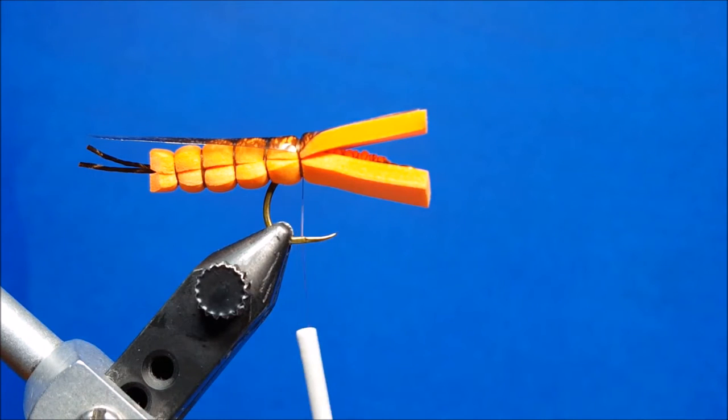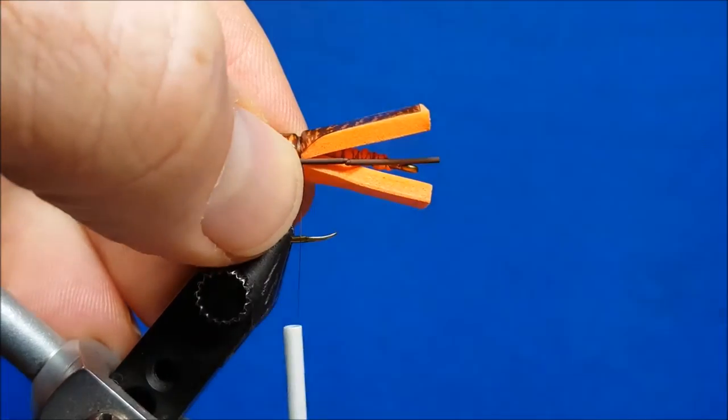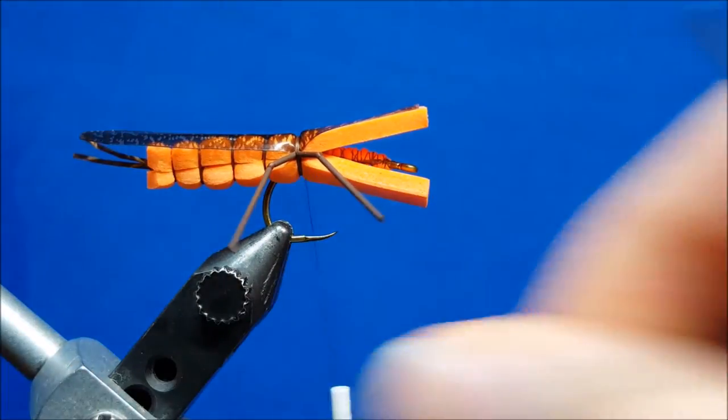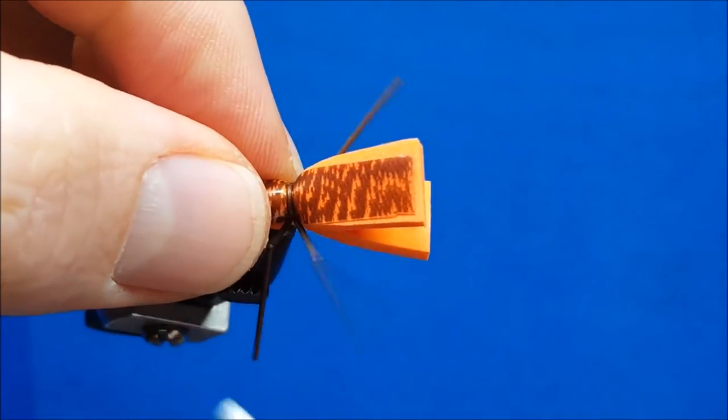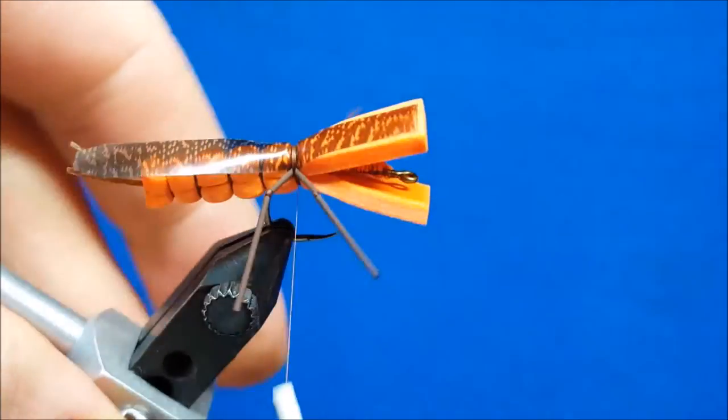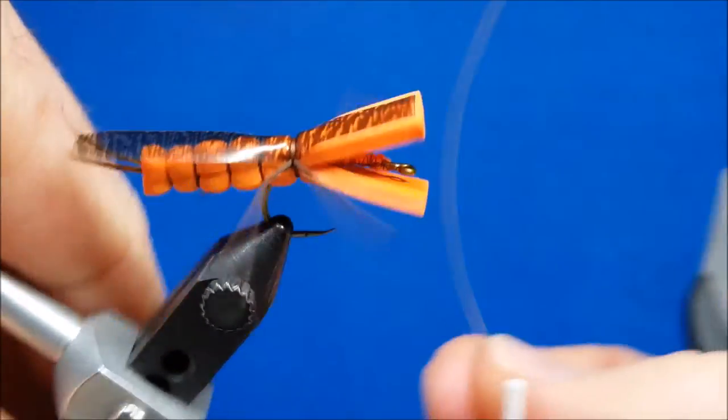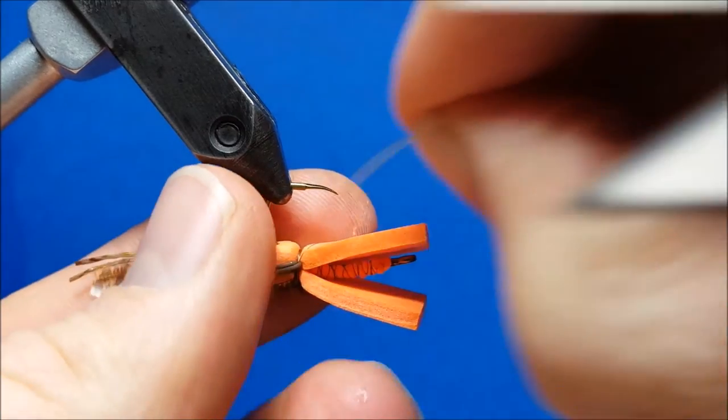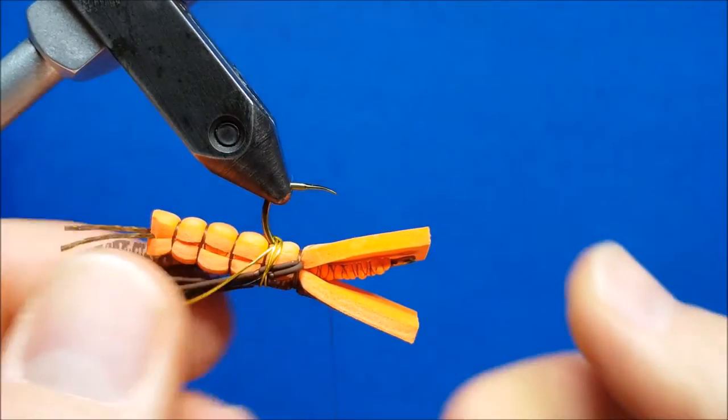On each side of that, I'm going to tie in a pair of legs. This is just medium round rubber, this is brown. I've got this knotted here, so I'm going to catch it, two or three wraps, take a look at it, see if it's where I want it. Come in with another piece on the opposite side of the hook here and repeat that same process. At this point, I'm going to take a spare piece of wire, I just have a spare piece of UTC wire, and I'm going to pull these rubber legs back and wrap that wire over the top of them. The bonus of that is it just keeps those legs out of the way during the rest of the tying process, so that I don't have to mess with that.